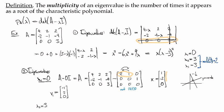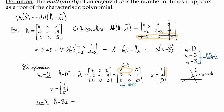Let's take a look at lambda_2, also lambda_3, both of which are equal to 3. So now I'm looking at row reducing A minus 3I. And so now I need to subtract 3 off the diagonal. So I have [1, 2, 2; -2, -4, -4; 0, 0, 0].